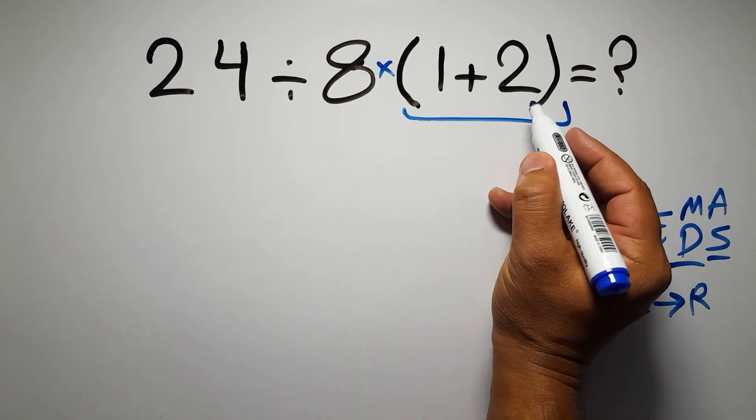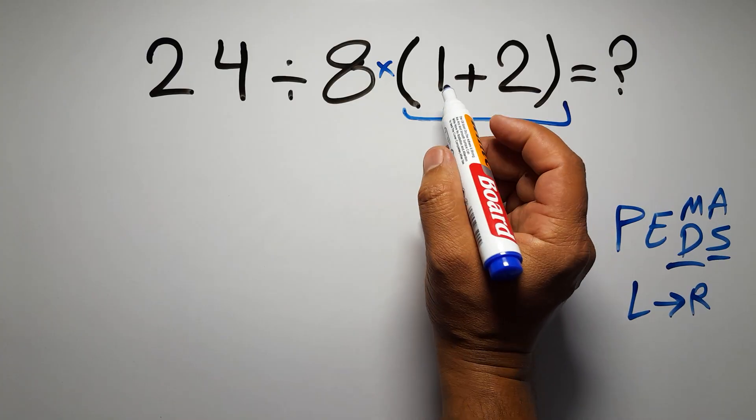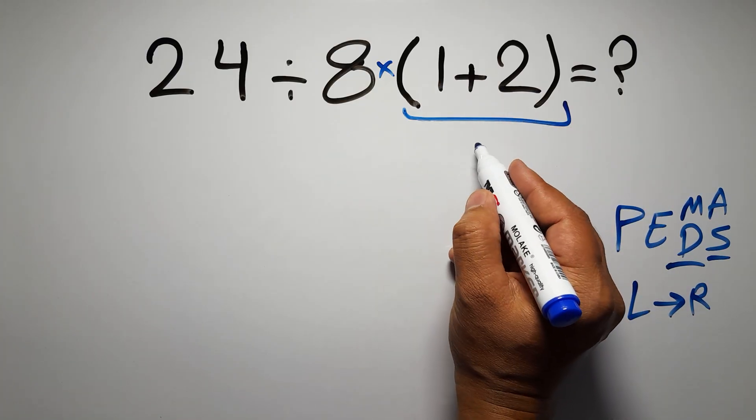So, first these parentheses. Inside these parentheses, we have 1 plus 2, which equals 3.